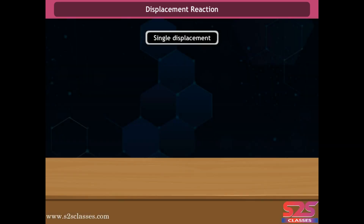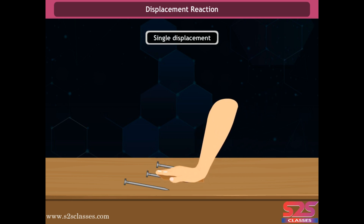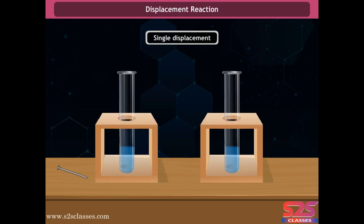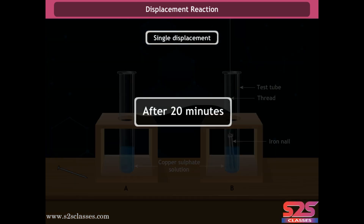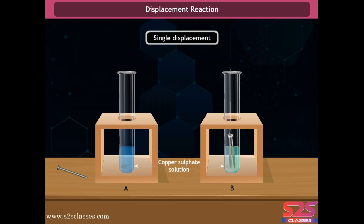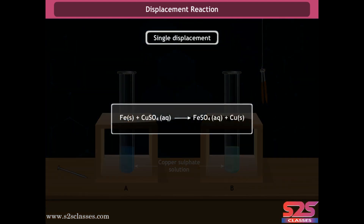To understand single displacement reactions, take three iron nails, clean them by rubbing with sandpaper, and take two test tubes A and B each containing about 10 ml of copper sulfate solution. Immerse two iron nails in test tube B for about 20 minutes, keeping one nail aside for comparison. After 20 minutes, the iron nail becomes brownish in color and the blue color of the copper sulfate solution fades. Iron has displaced copper from copper sulfate solution; this is called a displacement reaction.